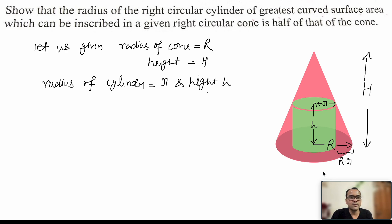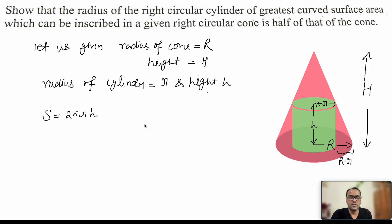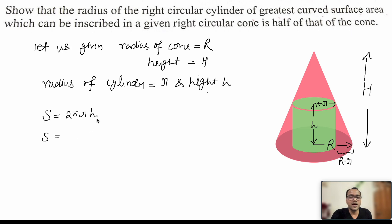Now we have to maximize the curved surface area of this cylinder. The cylinder's curved surface area S can be written as 2πrh — that's the formula. We need to maximize it, so the curved surface area should be written in terms of one variable only. But here small r and small h are both variables because the cylinder is inside the cone and can vary. Capital R and capital H are fixed constants.